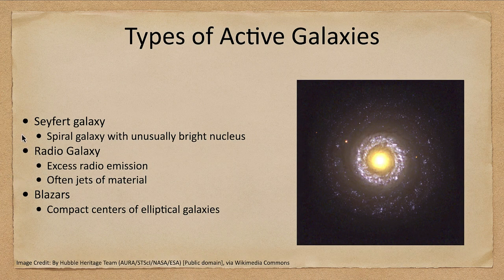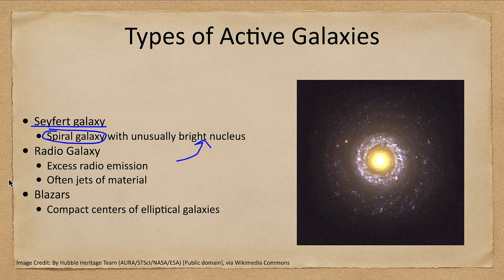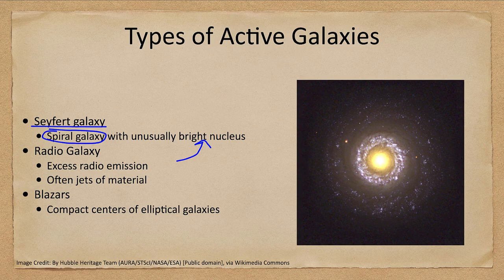We can start off with what we call a Seyfert galaxy. A Seyfert galaxy is a spiral galaxy where the nucleus is unusually bright. As we see here, the nucleus is extremely bright — in fact it's very hard to see the spiral arms because of the overwhelming brightness of the nucleus. It could have a supermassive black hole at the center which is helping produce this excess radiation.